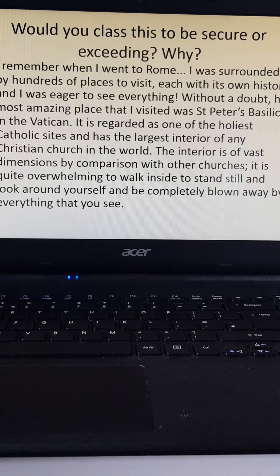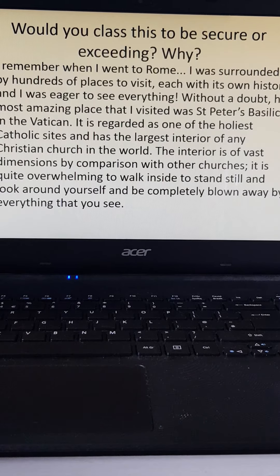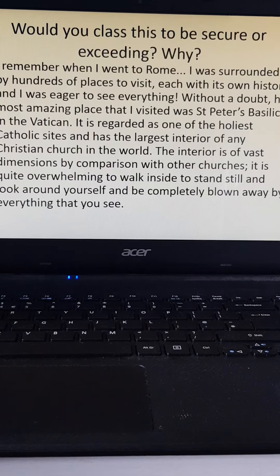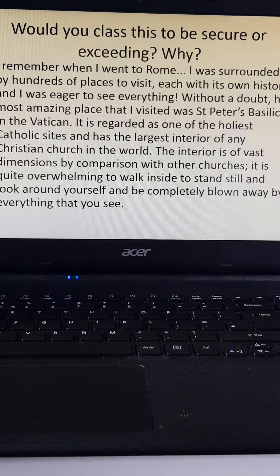So what are we thinking — secure or exceeding, and why? Well, we've got a lot more punctuation: we've got the ellipsis on the first line, an exclamation mark on the third line, and a semicolon after 'by comparison with other churches'. The punctuation is a lot better and there's lots more detail. I think that one is certainly a step up from the last piece and would be exceeding rather than secure.